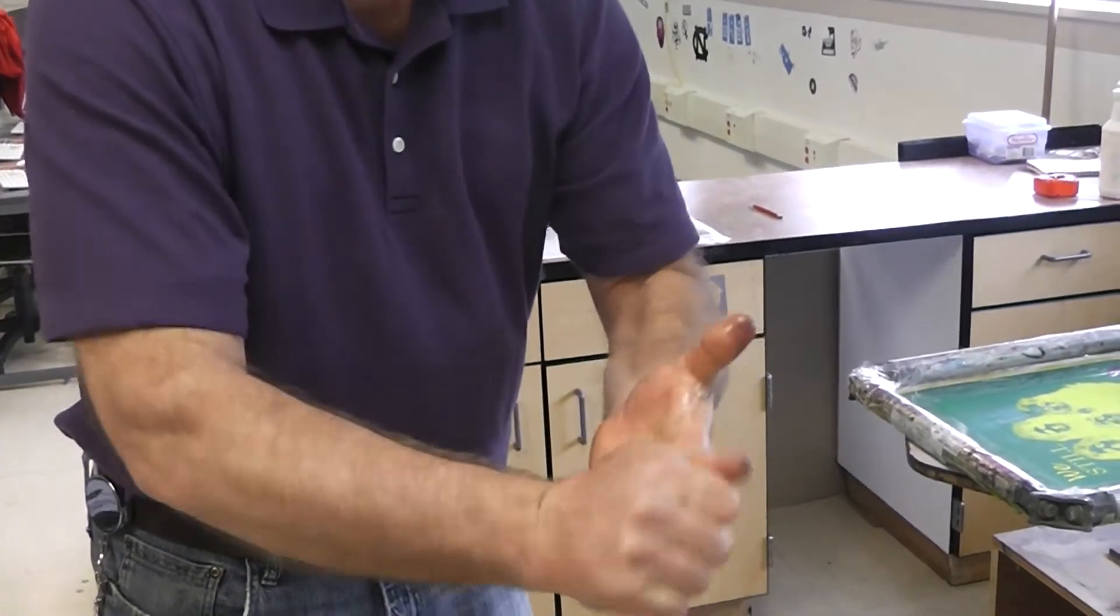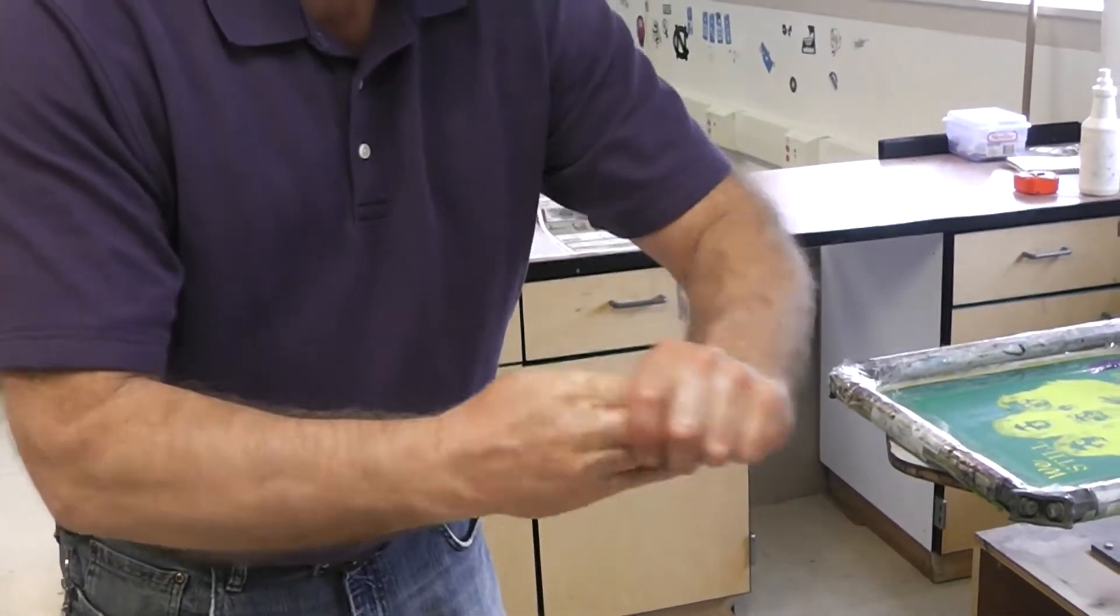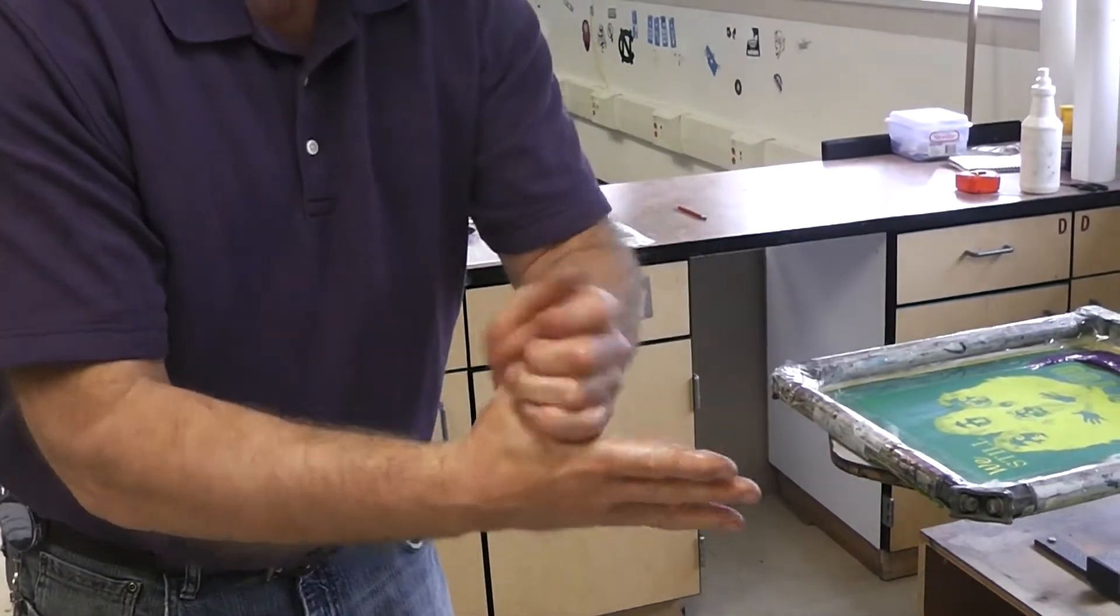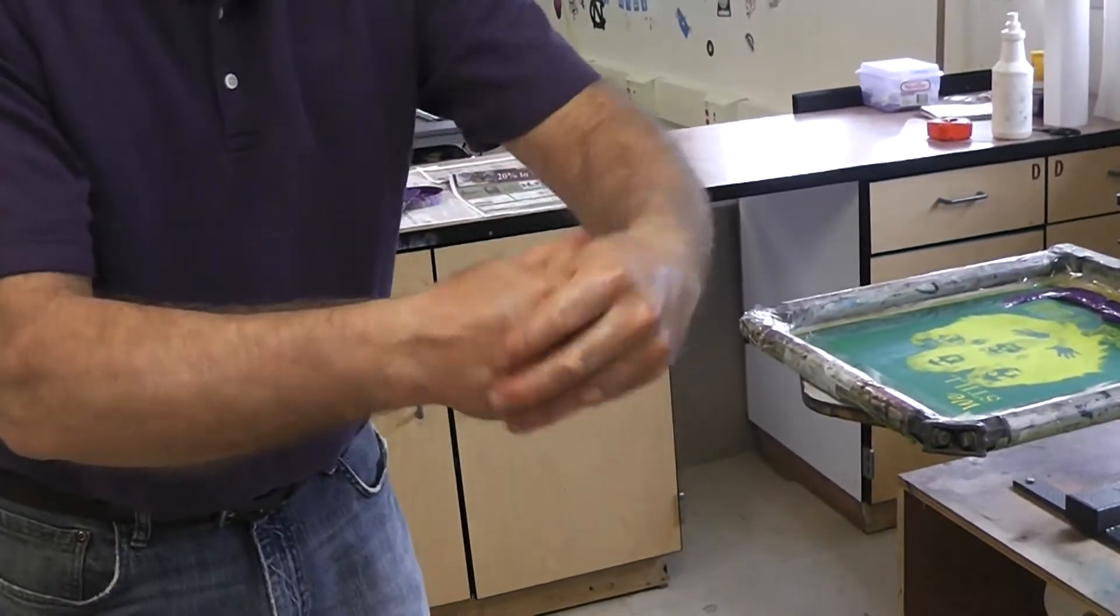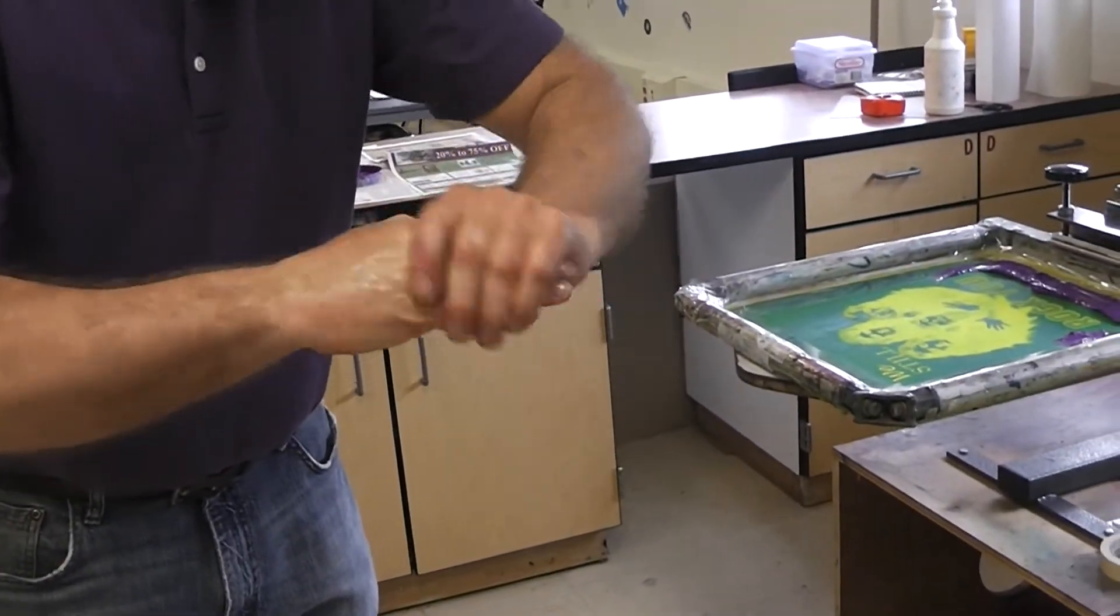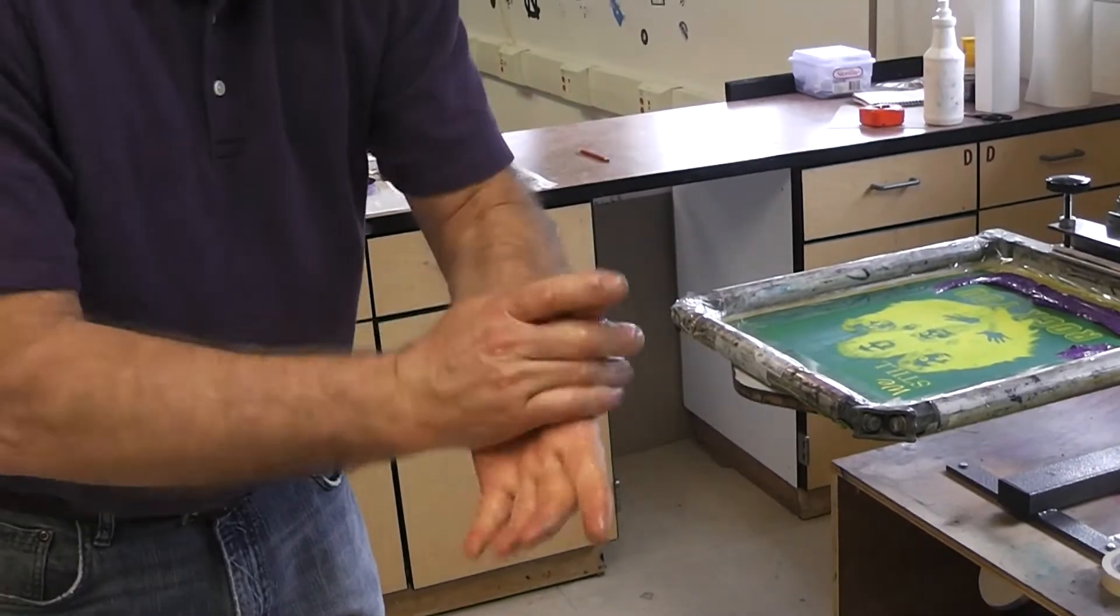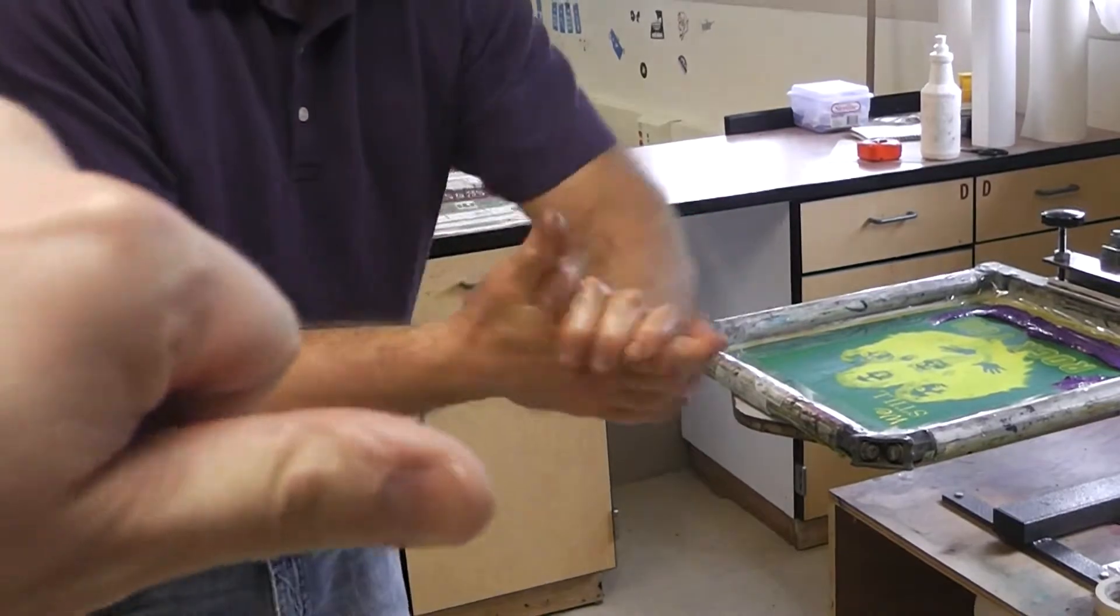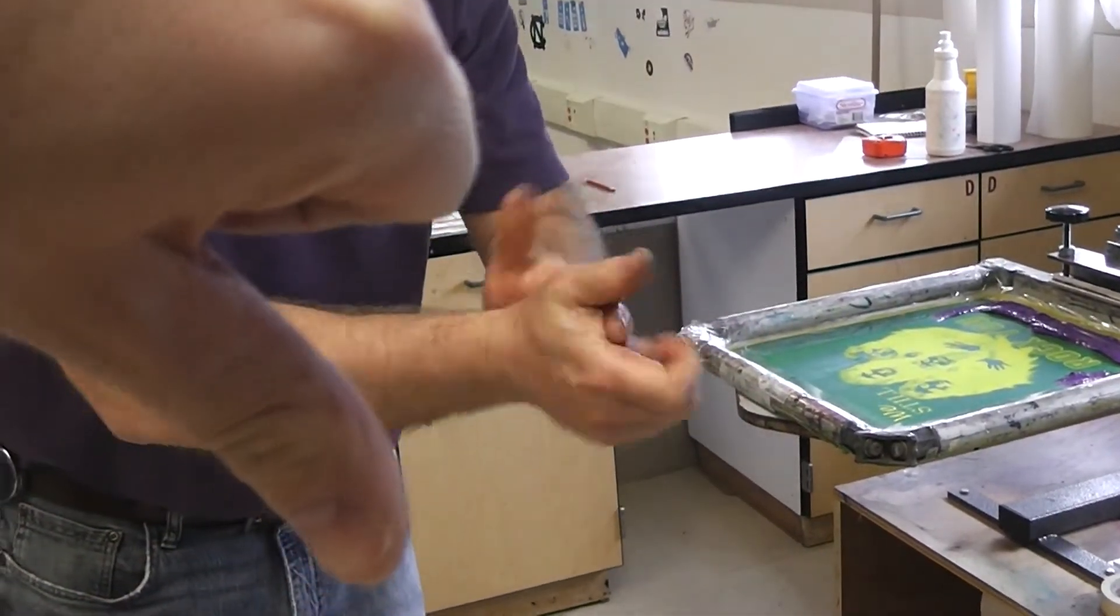Now I have some ink from that inkjet printer that I had to revive on my hands. And that stuff is strong. So I don't know if that black is going to come off my hands right now. But I'm rubbing that in. There's a little bit of pumice in there. And Mr. Adamiak loves teaching kids how to clean their hands.